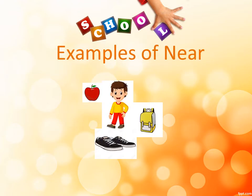Examples of near. So here we have a boy in the picture. And what are some things that you are seeing that is close by — that if he stretches out his hand he can touch it? So there's an apple, a book bag, and a pair of sneakers. These three objects are near or close to the boy, so that if he stretches out his hand or bends down to his feet, he can touch all those objects or all those things.